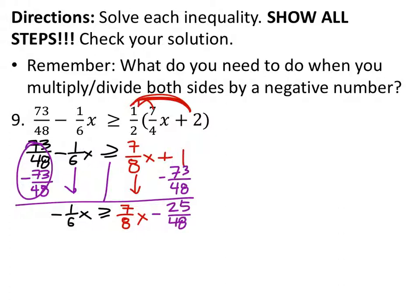Next up, I am going to subtract that seven-eighths x from both sides of the inequality to zero that out on the right side of the inequality. So I've got negative one-sixth x minus seven-eighths x. And in my calculator I'm just putting negative one-sixth minus seven-eighths, because I know it's going to be in x's right there. So in my calculator that gives me negative twenty-five-twenty-fourths.